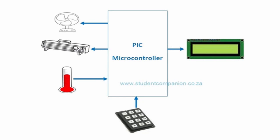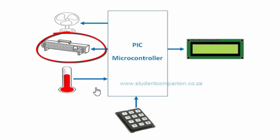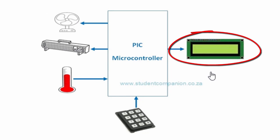The desired temperature setting is entered using a keypad. The temperature of the area is measured using an analog sensor. The microcontroller reads the temperature every 10 seconds and compares it with the desired value entered using the keypad. If the desired value is higher than the measured temperature, the heater is switched on to warm the area. If the measured value is higher than the desired value, the fan is switched on to cool off the area. An LCD display shows the measured temperature continuously.